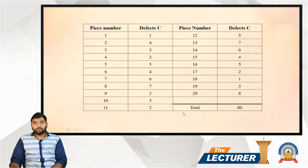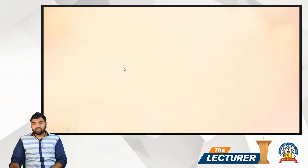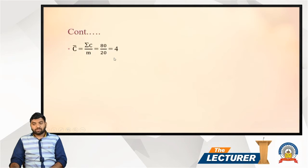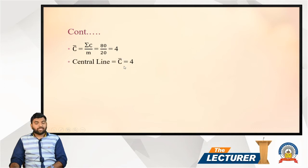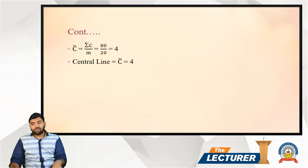C-bar is calculated as the total number of defects divided by the number of samples: 80 divided by 20, which gives C-bar equal to 4. The central line is always the same as C-bar, so the central line is 4.